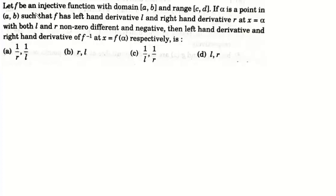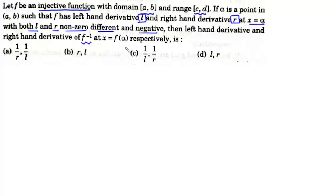In this video, we will discuss a very interesting and unique problem in differentiability. We are given a function f which is an injective function, that is it is one-one, in the domain a to b and range c to d. If alpha is a point in open interval (a,b) such that f has left hand derivative l and right hand derivative r at x equals alpha, where both l and r are non-zero, different, and negative, then we need to find the left hand derivative and right hand derivative of its inverse function at x equals f(alpha).